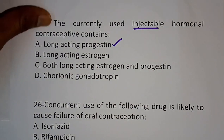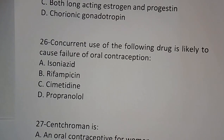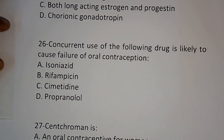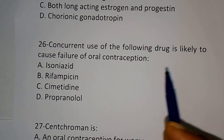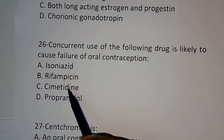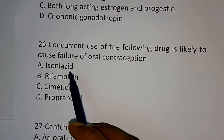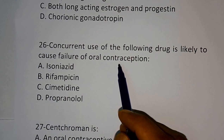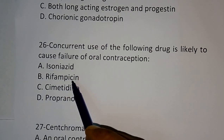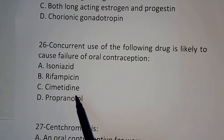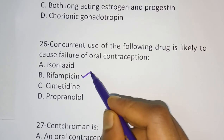Question number 26: Concurrent use of the following drug is likely to cause failure of oral contraception. When an oral contraceptive drug is taken along with one of these drugs, it will cause failure. Options: isoniazid, rifampicin, cimetidine, propranolol. The correct answer is rifampicin.